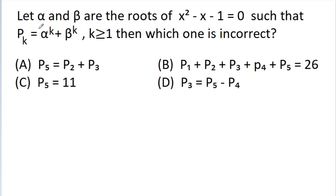In this video, we have given that alpha and beta are the roots of x squared minus x minus 1 equals 0, such that p_k equals alpha to the power k plus beta to the power k, where k is greater than or equal to 1. We have to choose the incorrect option from the 4 options given.